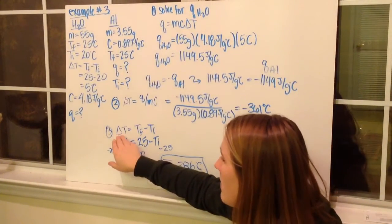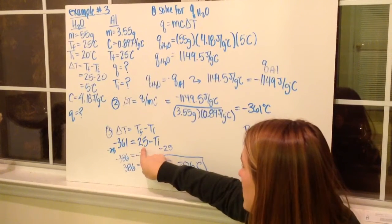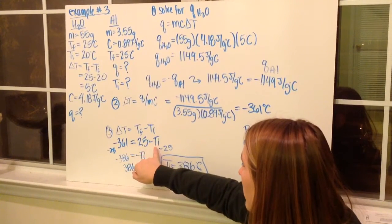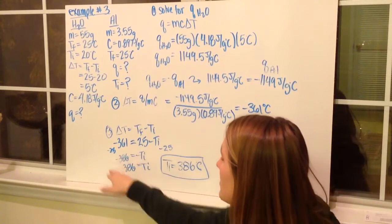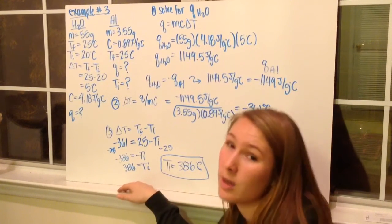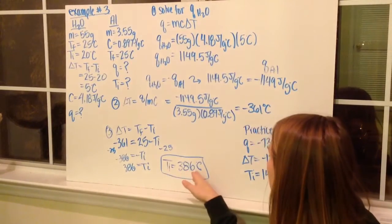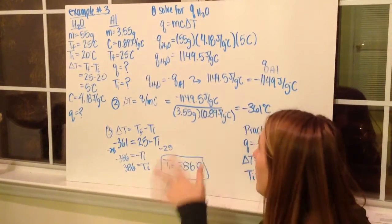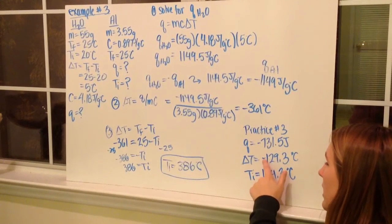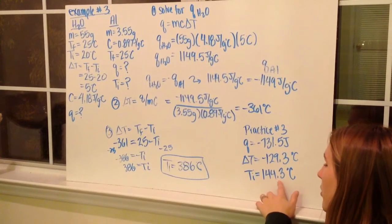Now solving for initial temperature, knowing delta T = T final minus T initial. Plugging in: T final is 25, and delta T is negative 361. Subtracting 25 from both sides gives negative 386 equals negative T initial. Dividing both sides by negative 1, I get an initial temperature of 386 degrees Celsius. For practice problem three, following the same setup: Q should be negative 731.5 joules, delta T should be negative 129.3 degrees Celsius, and the initial temperature should be 144.3 degrees Celsius.